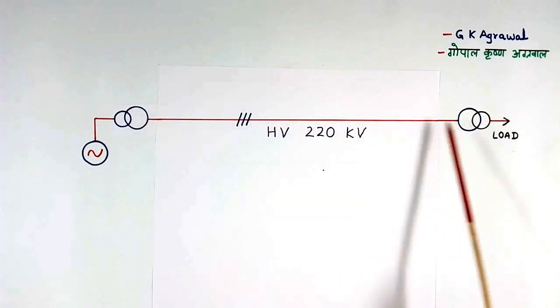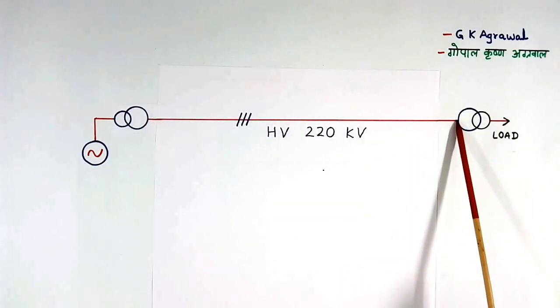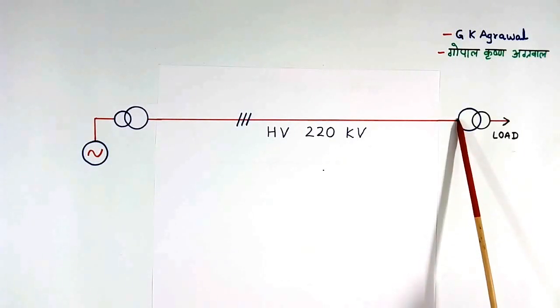This transmission line length may be few hundred km. May be 100 km, may be 200 km, may be 300 km.